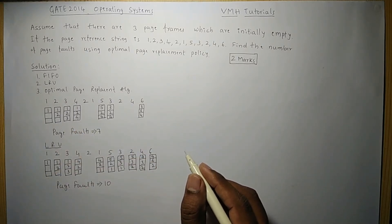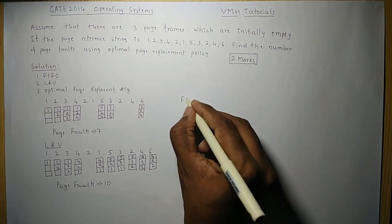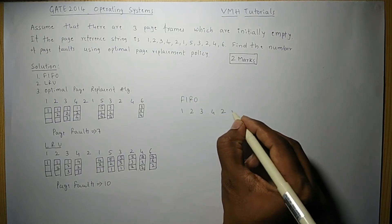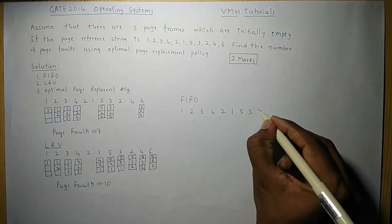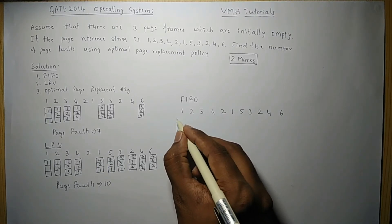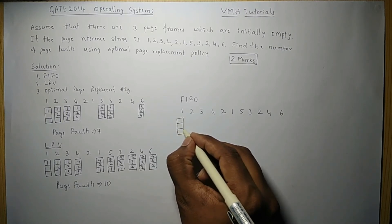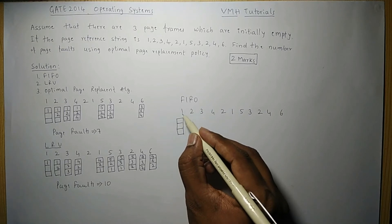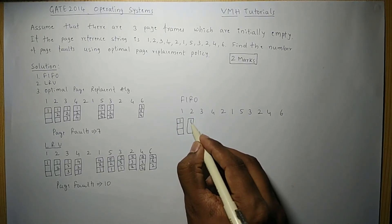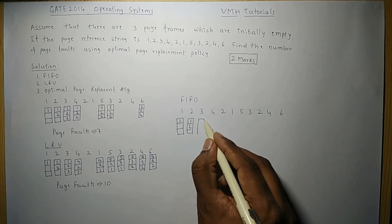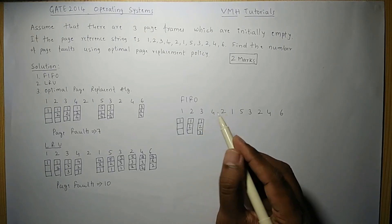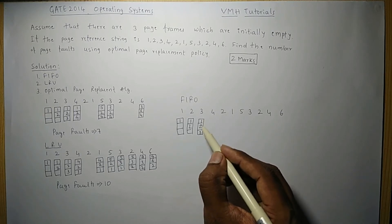Now we will solve the same problem using the FIFO algorithm, where we replace the page that entered primary memory first. The page reference string is again 1, 2, 3, 4, 2, 1, 5, 3, 2, 4, 6, with three initially empty frames. Page 1 is referenced — not available, placed in slot 1. Page 2 — not available, placed in slot 2. Page 3 — not available, placed in slot 3.